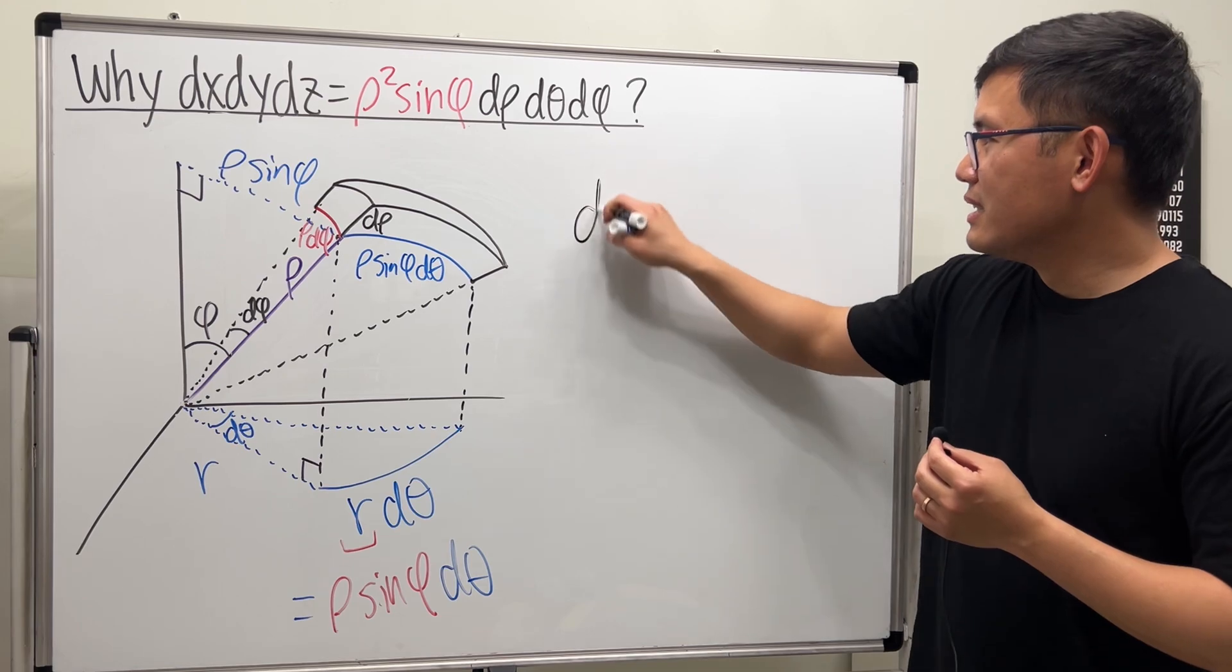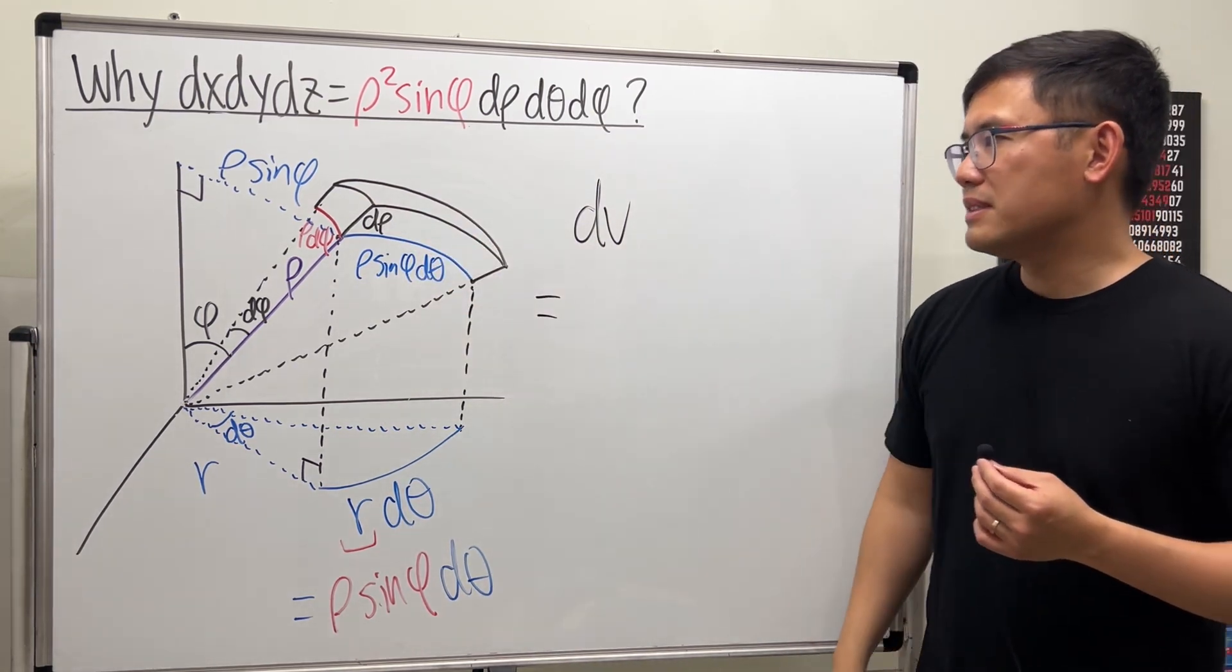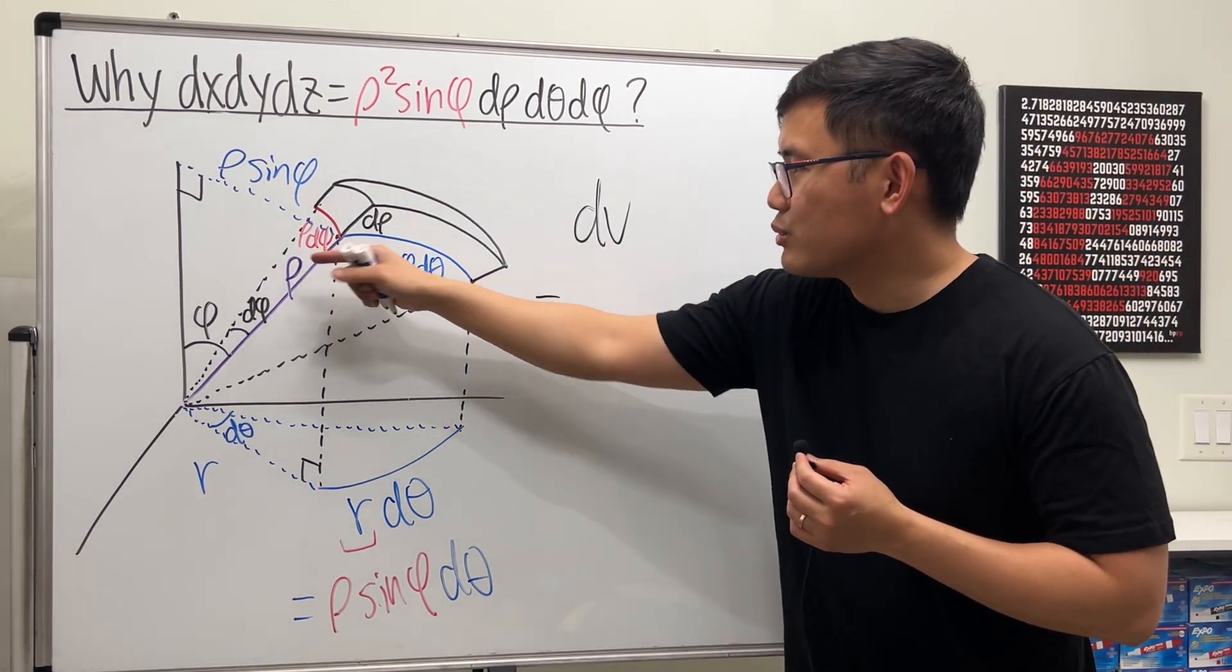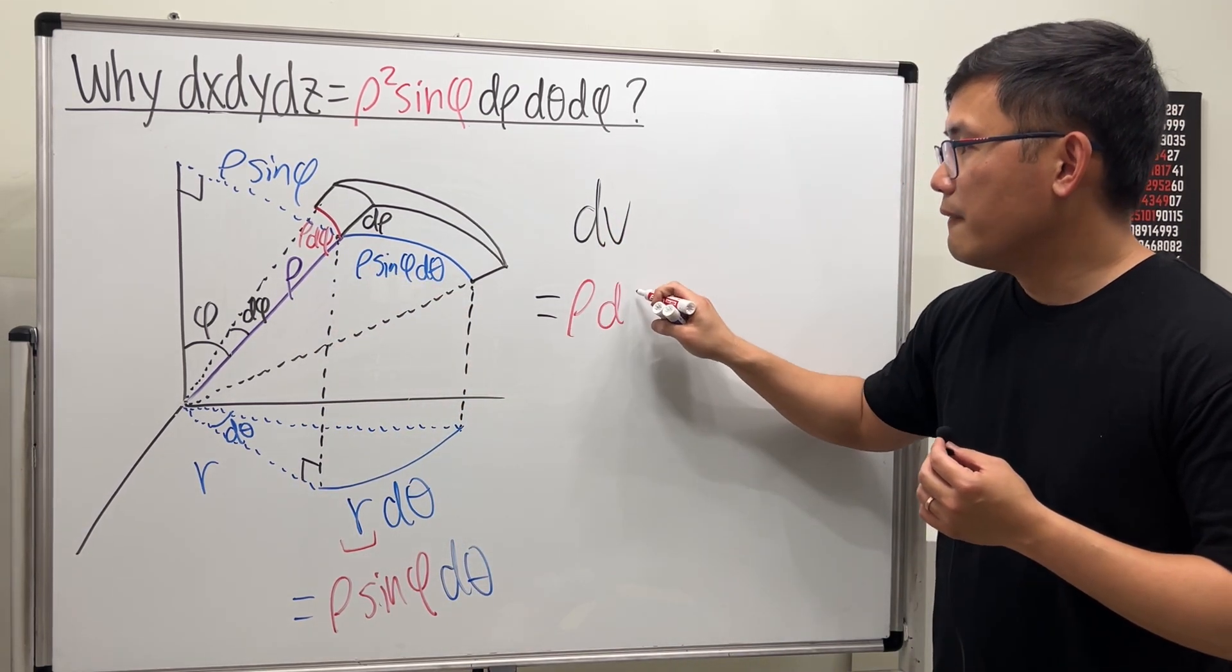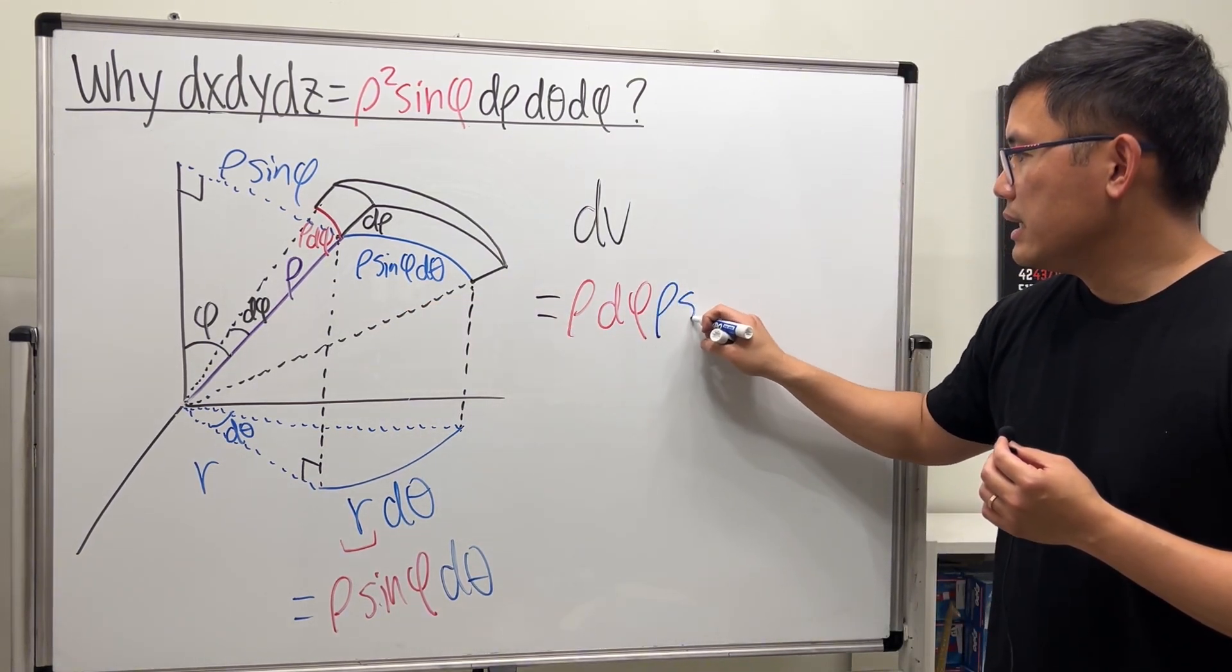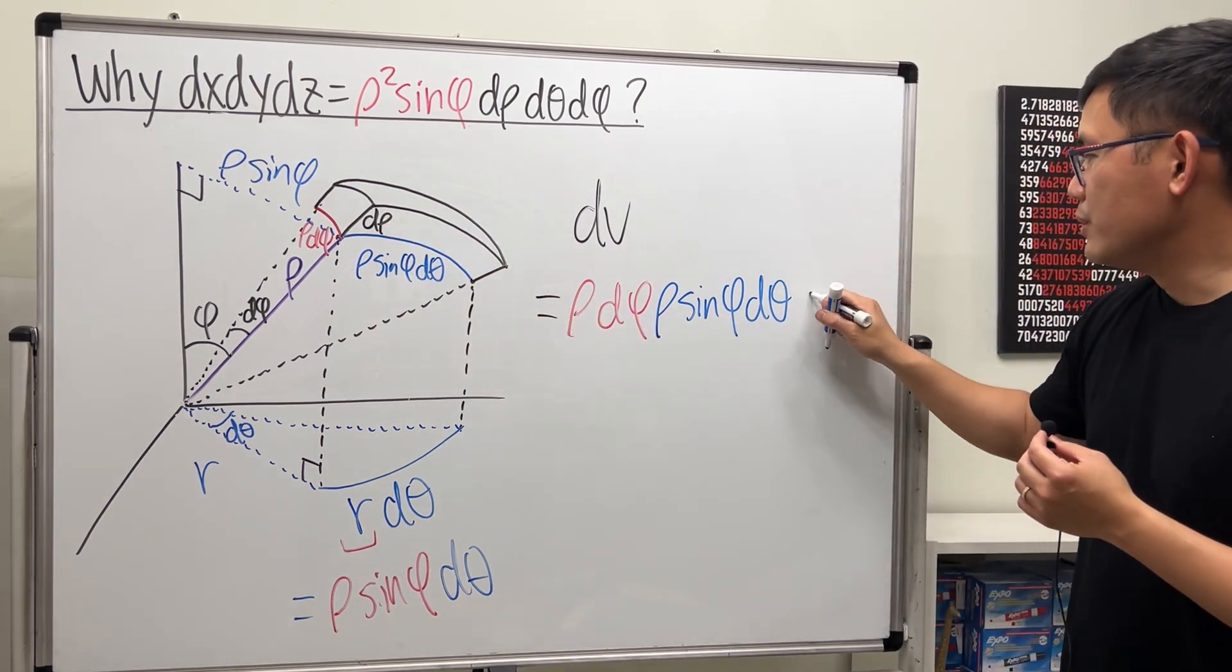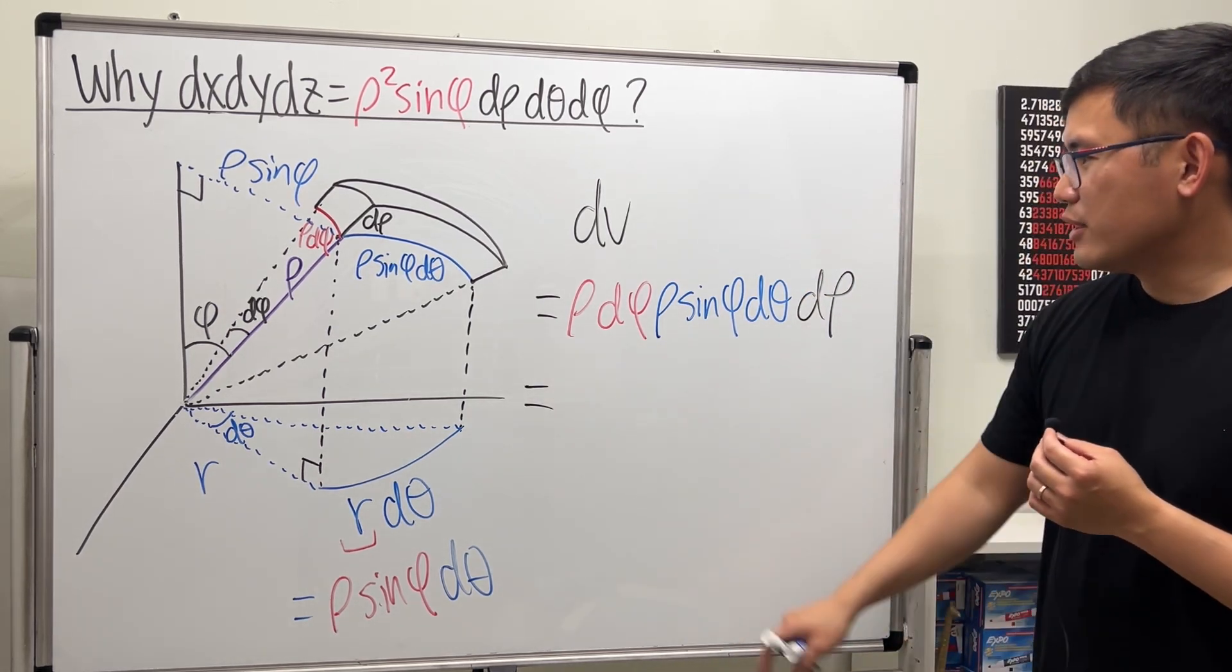Now, ladies and gentlemen, d V is the volume of this thing. This thing behaves like a little cube - you just need to multiply this, this, and that to get a little volume for this. I'll put down this first, which is rho d phi, and then next I have this, which is rho sine phi and then d theta. Lastly I'll put this down, which is d rho.